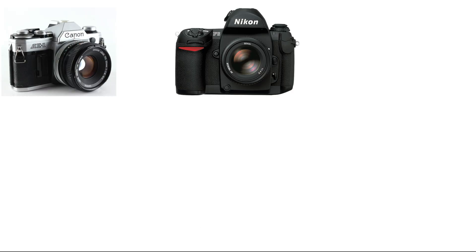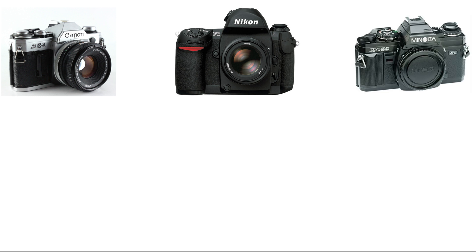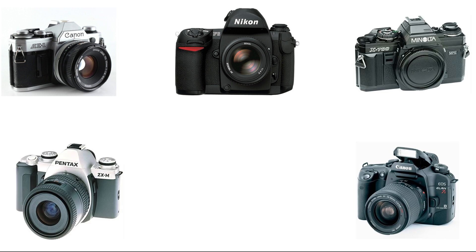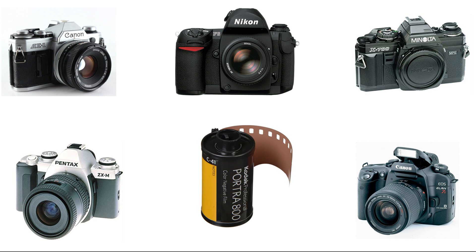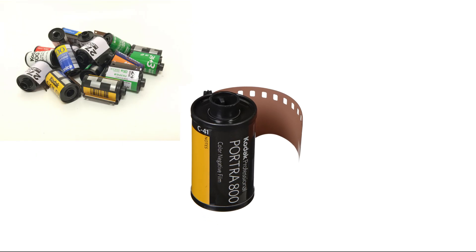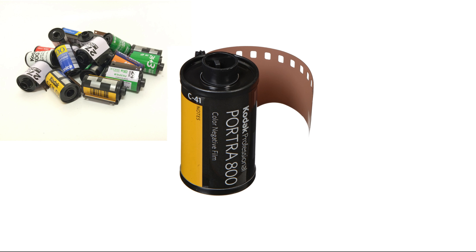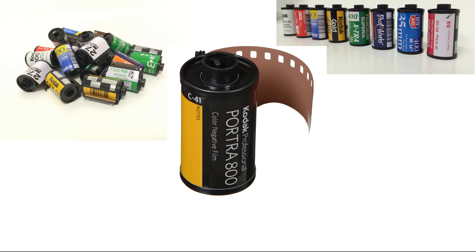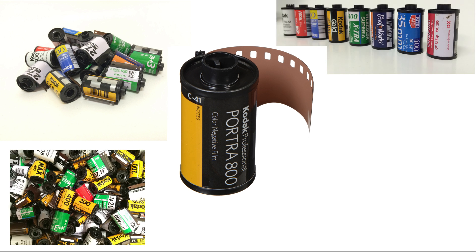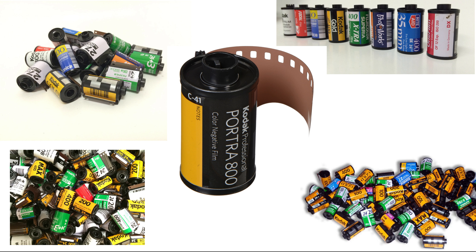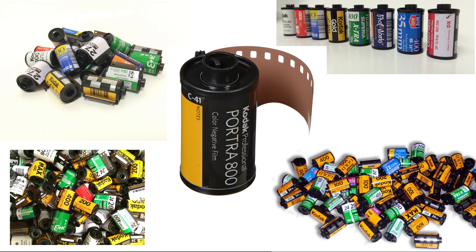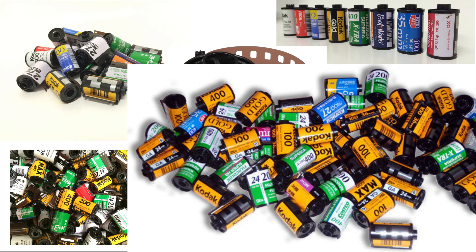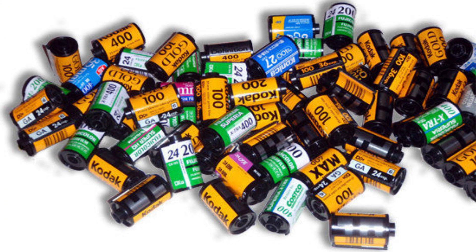Another reason it can be confusing is because until the digital photography revolution, most people who had interchangeable lens cameras overwhelmingly shot one format: 35mm roll film. 35mm film has been in use since 1889, but it was not widely adopted in its popular canister format until 1934. It is still widely available in this format today. There have always been other film formats out there, many still in use today, but none truly rivaled 35mm film.